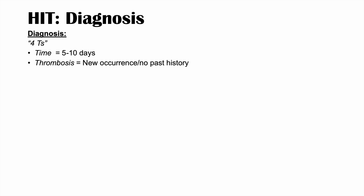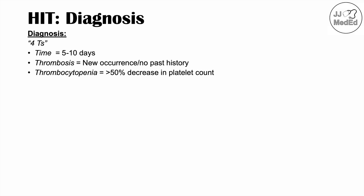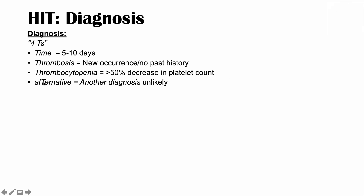Diagnosis of HIT type 2 uses the four Ts. The first T is time — 5 to 10 days after heparin exposure. The second T is thrombosis, often a new occurrence with no past history. The third T is thrombocytopenia, usually a decrease in platelet count greater than 50%. The fourth T is alternative — meaning another diagnosis is unlikely.